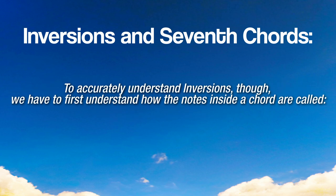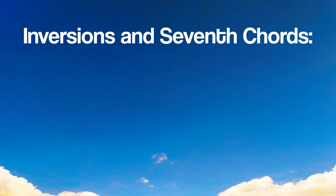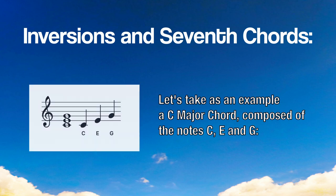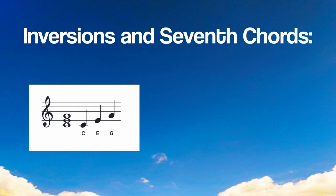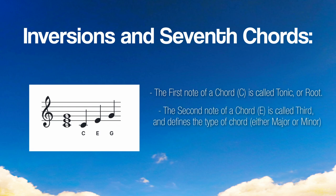To accurately understand inversions, we have to first understand how the notes inside a chord are called. Let's take as an example a C major chord, composed of the notes C, E and G. The first note of a chord, C, is called tonic or root. The second note, E, is called the third and defines the type of chord — either major or minor. The third note, G, is called the fifth.